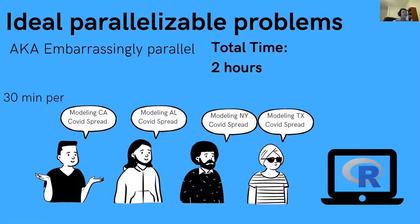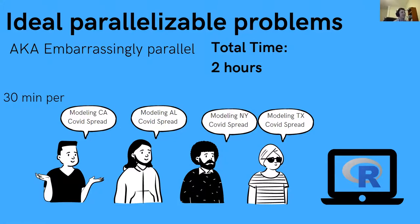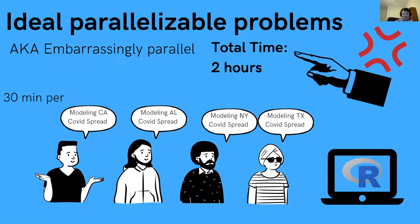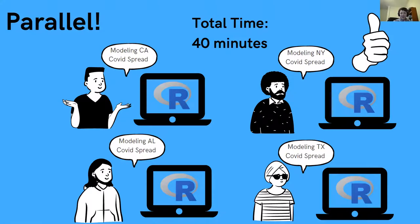Do you think they need to do this task sequentially, or could they split it up and do it at the same time? If you're modeling within a state and not considering migration, the tasks are kind of independent of each other — the Texas COVID model is probably not going to be affected by the Alabama COVID model. So the supervisor came in and said, 'What are you guys doing, waiting in line? Go grab an R laptop and do it yourself.' They were embarrassed. Now each of them is doing their task at the same time, and the total time was 40 minutes.